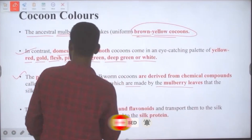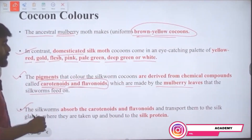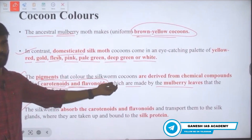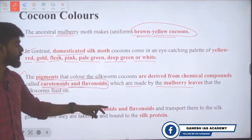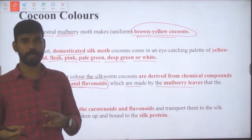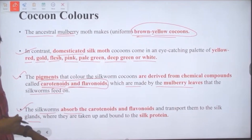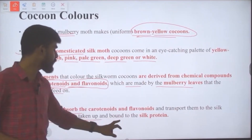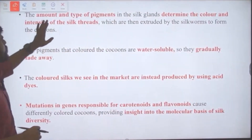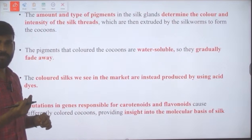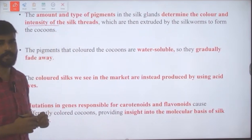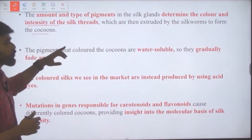Carotenoids and flavonoids are produced by the mulberry leaves that the silkworm feeds on. The silkworm absorbs these compounds and transports them to the silk glands, where they are bound to silk protein and released as thread. The amount and type of these two pigments in the silk glands determine the color and intensity of the silk thread extruded in the form of cocoons.